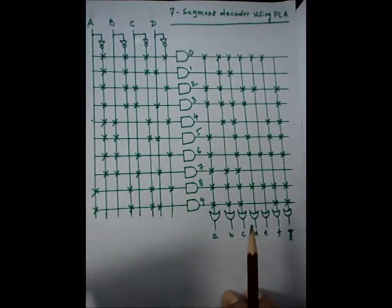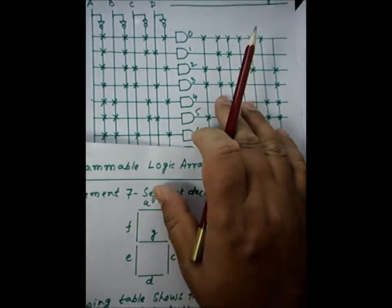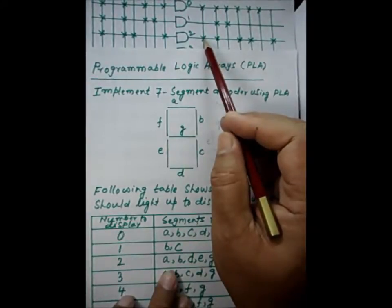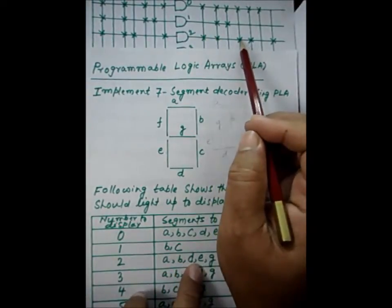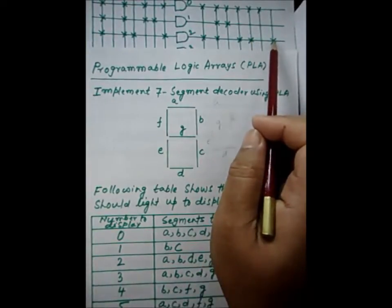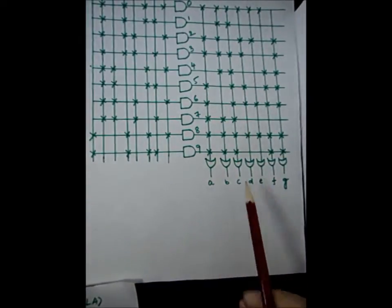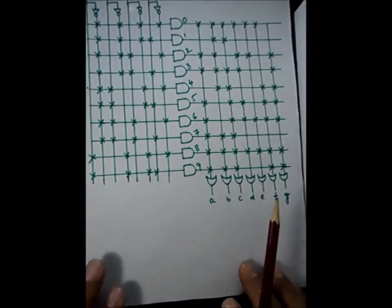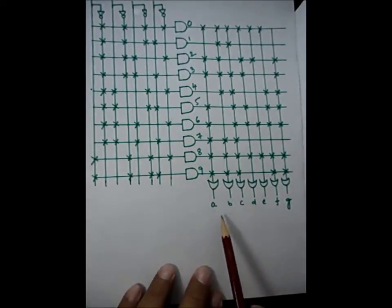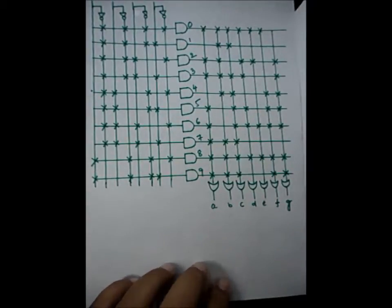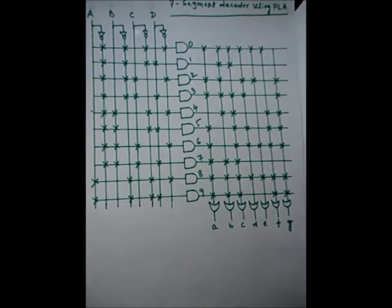Therefore A, B, D, E, and G will be displayed. You can compare this with the table and see it matches. A, B, D, E, and G — these five are connected to the OR gate. Because any one input to an OR gate is high, the output will be high, so those LEDs will glow and the remaining LEDs will be off, displaying digit two.